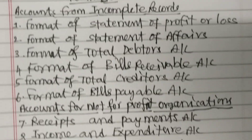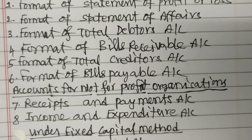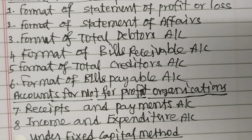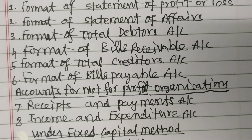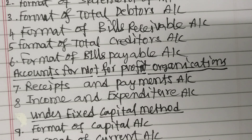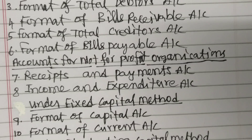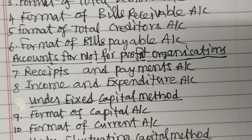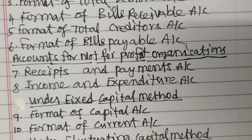Format of Bills Payable Account — all of these formats are in your account chapter. For Not-for-Profit organizations, the Receipt and Payments Account and Income and Expenditure Account formats will be covered.